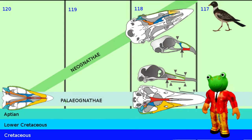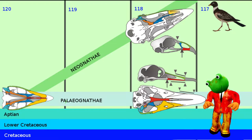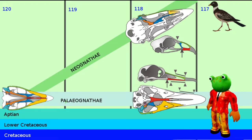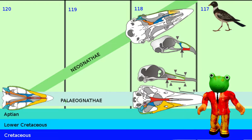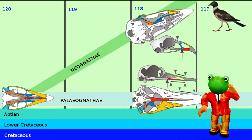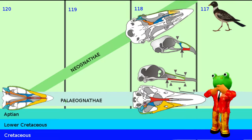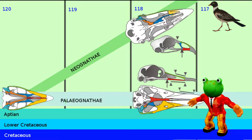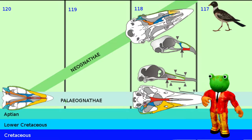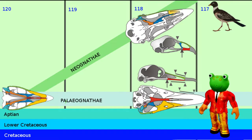Last time we reached the last common ancestor of all living birds. The time when he lived is set to 120 or 110 million years ago. The only hint for this ancestor is in the gene of living and some fossil birds. In the same way it's possible to find out the age of different bird groups.